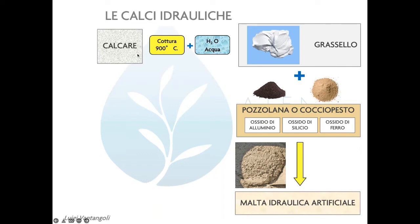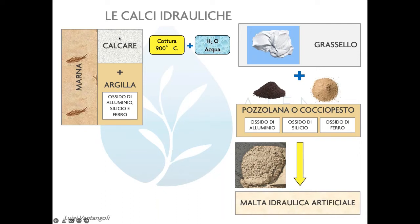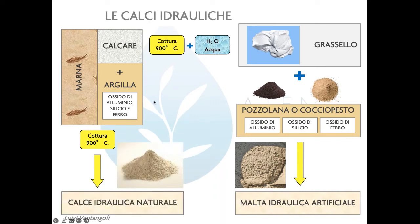La calce idraulica naturale è l'insieme di calcare e argilla che la natura dà già pronti insieme: la roccia si chiama marna. Se metto la marna nel forno e la cuocio in modo tradizionale, ottengo calce idraulica naturale. Fu poco usata dagli antichi romani ma molto impiegata dagli architetti del Rinascimento: la famosa calce mora, la moretta del Palladio. A Venezia si costruivano i muri con la calce mora, che si distingueva dalla calce lianca (calce aerea), mentre per i marmorini si utilizzava il grassello.